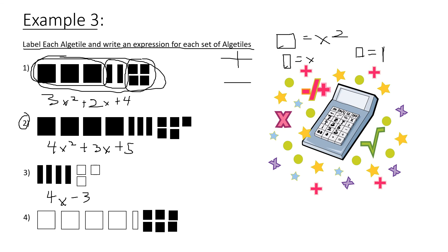Number 4: there are negative 4 big boxes — so negative 4x squared — minus 1 long stick, which is just x, plus 6 small shaded boxes — so plus 6. That's how you read algebra tiles.